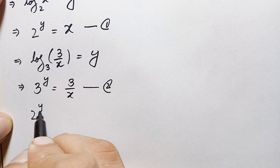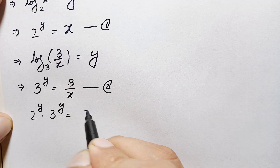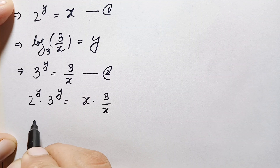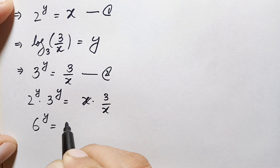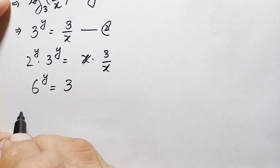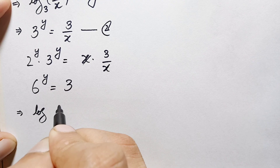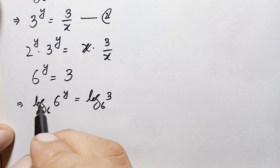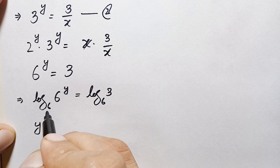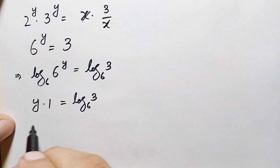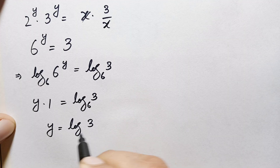We will multiply equation 1 with equation 2. Multiplying left hand sides: 2 raised to power y times 3 raised to power y. Since the powers are the same, we combine bases: 6 raised to power y. Right hand side: x times 3/x — the x cancels — giving 3. So 6 raised to power y equals 3. Taking log with base 6 on both sides: y times log of 6 with base 6 equals log of 3 with base 6. Since log of 6 with base 6 is 1, we get y equals log of 3 with base 6.